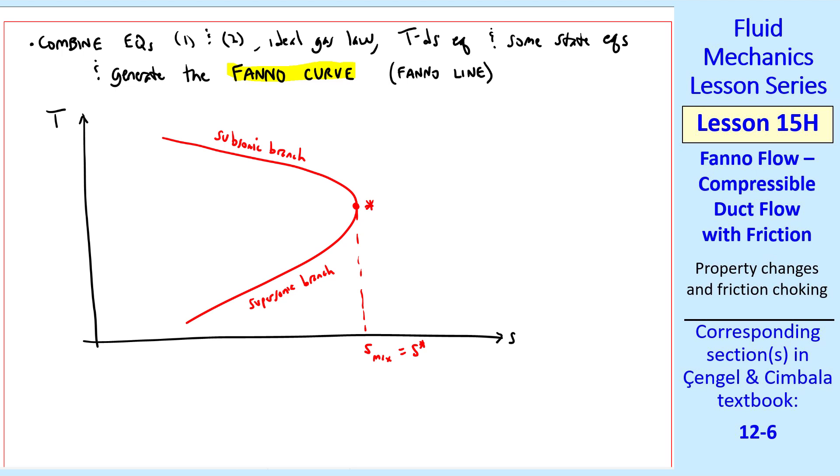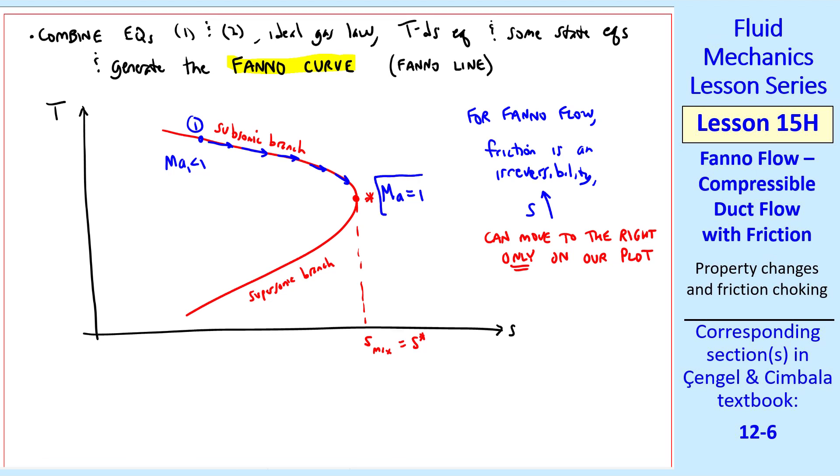A key to understanding Fanno flow: since there's no heat transfer, and since friction is an irreversibility, specific entropy must always go up. In other words, we can move to the right only on our plot. If location 1 is in the subsonic branch, as we go down the pipe, when there's friction, we must go to the right, increasing S, eventually reaching sonic conditions, or star conditions, or critical conditions, where the Mach number is 1. I say moving down the pipe, or the duct.